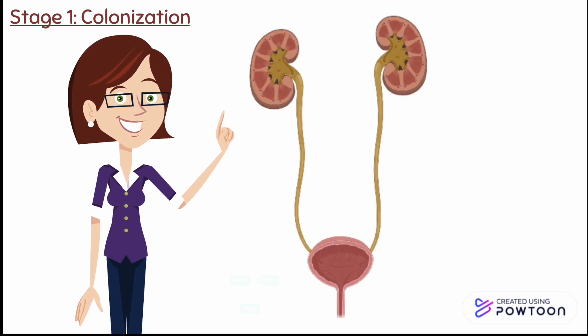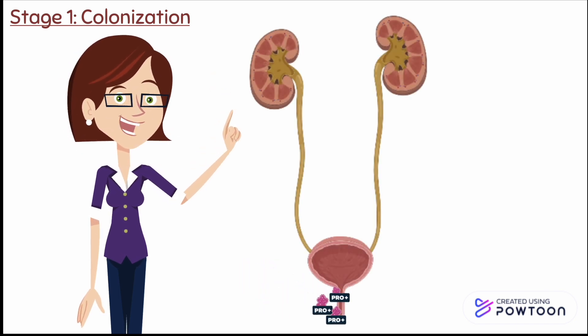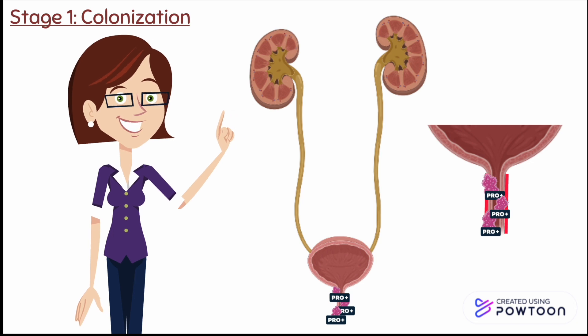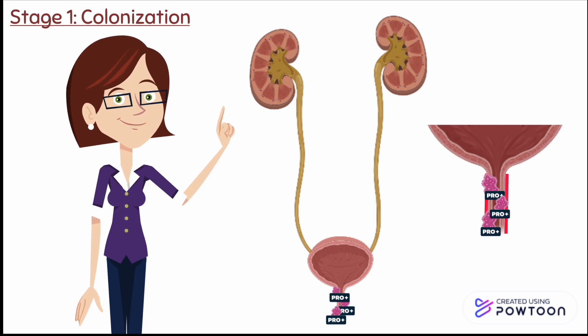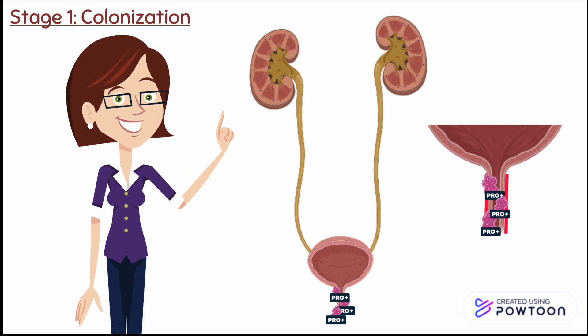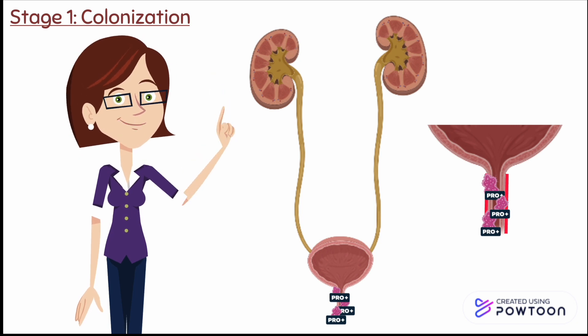Stage 1 is colonization. Bacteria colonize the periurethral area, which causes infection in the urethra, also known as urethritis. The bacteria then slowly ascends upwards through the urethra and makes their way to the bladder.